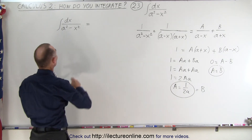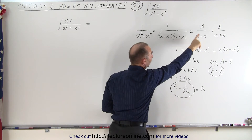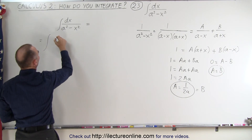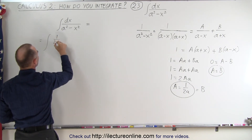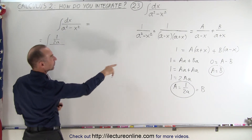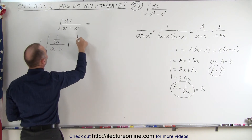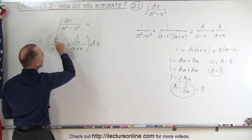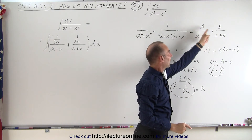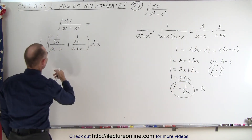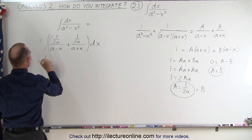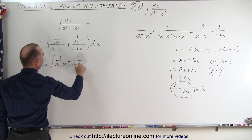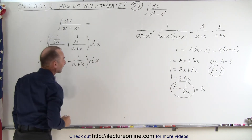This means we can write the integrand as the sum of those two fractions with A and B equal to 1 over 2a. The integral becomes the integral of (1 over 2a) divided by (a minus x) plus (1 over 2a) divided by (a plus x), all times dx. Factoring out 1 over 2a, this equals (1 over 2a) times the integral of 1 over (a minus x) plus 1 over (a plus x), times dx, and both terms can be readily integrated.